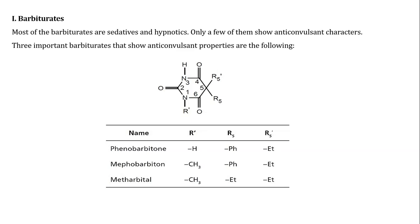These drugs are obtained by substitution in the basic skeleton of Barbiturates at the R1 position, R5 position, and R5' position. These substitutions are given in the table, and by substituting the substituents at these positions, the drugs are obtained with anti-convulsant activity.